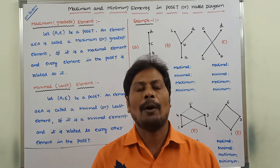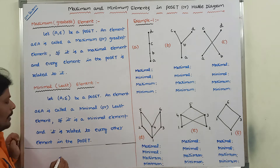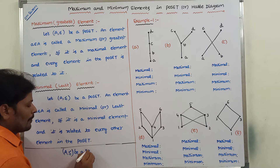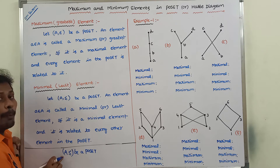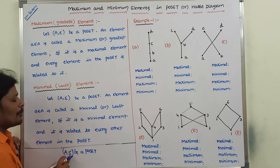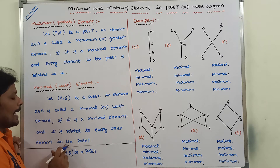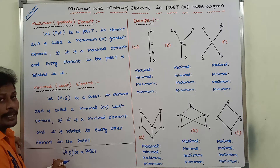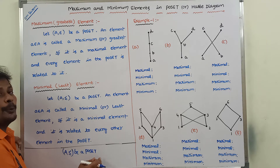In this video, we have to discuss about what is maximum element or greatest element. Let us consider (A, ≤) to be a poset. Here, A is a finite set — it contains a finite number of elements. On that finite set, we define a relation that is less than or equal to. It satisfies three properties: one is reflexive, second is antisymmetric, and third is transitive. If any relation satisfies these three properties on a finite set, we can say that (A, ≤) is a poset.